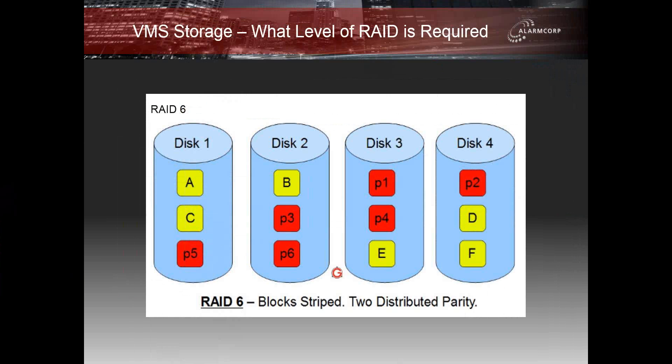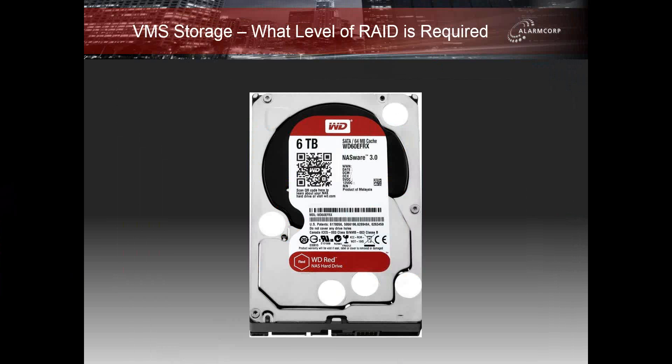As progress happens in the computer industry, we're currently at 4-terabyte drives, but the 6-terabyte drive has been released and 8-terabyte drives are coming in the not-too-distant future. When you configure your RAID levels and do the maths, in RAID 5 you're losing one drive and in RAID 6 you're losing two. So with a 12-drive scenario, you could be losing 12 terabytes purely for backup. That's a lot of data to lose, but also a lot of data you can keep available.